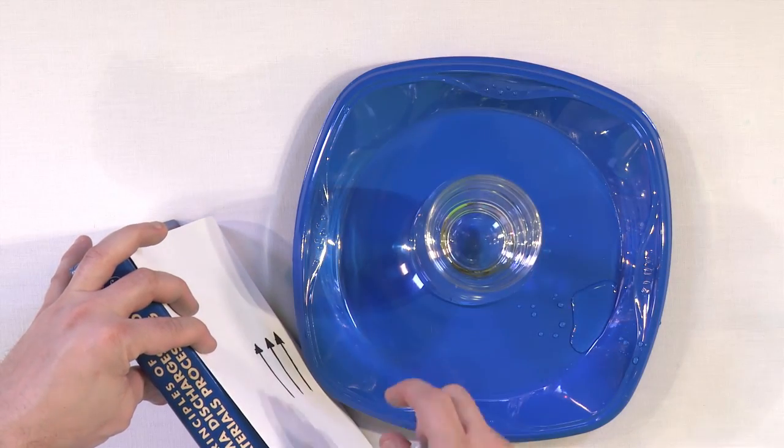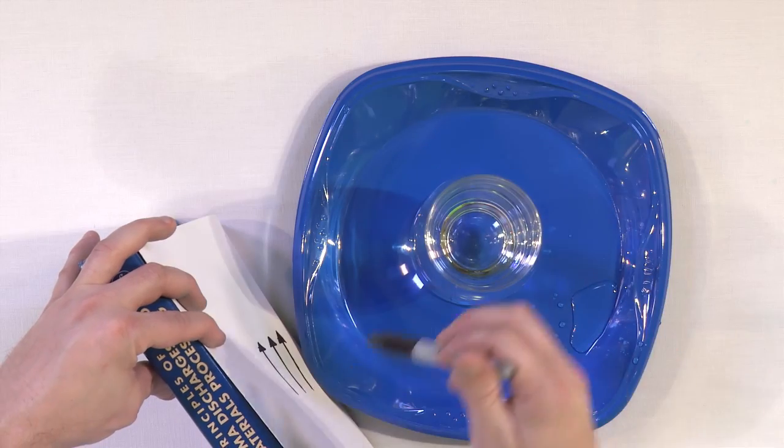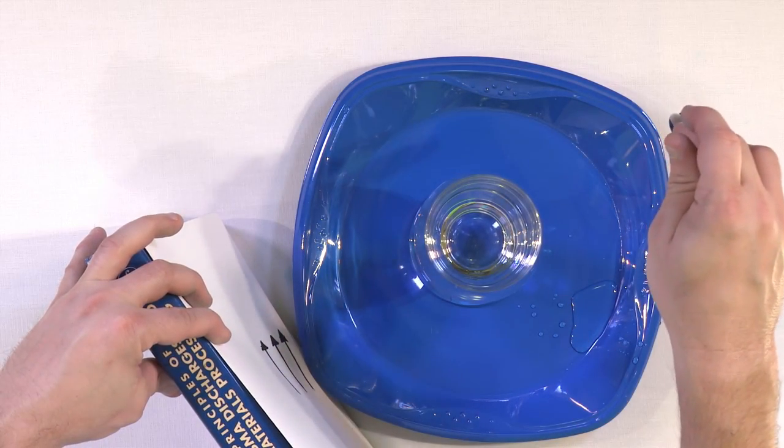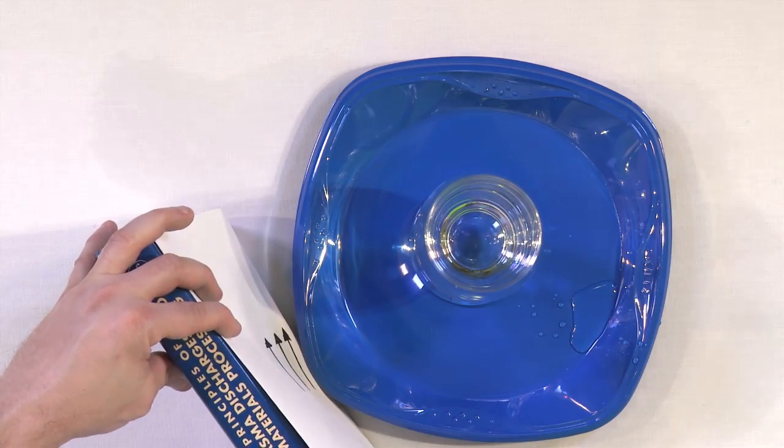So if your eye is sitting over here, instead of seeing the head over here and the tail over here, because it's bent, you see the head over here. And because the tail is bent, you see the tail over here.